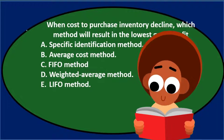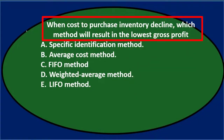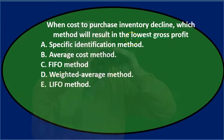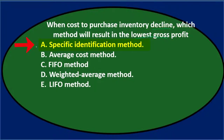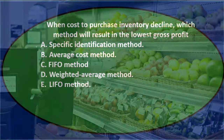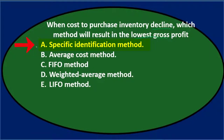We'll read through the question and see if we can eliminate some of the options. When costs to purchase inventory decline, which method will result in the lowest gross profit? We're looking for the lowest gross profit when costs are declining — the opposite of the usual situation. For option A, specific identification, we don't really know if that will result in the lowest gross profit, because it's not really a cost flow assumption — it specifically identifies the inventory that was sold, typically used for larger inventory items.